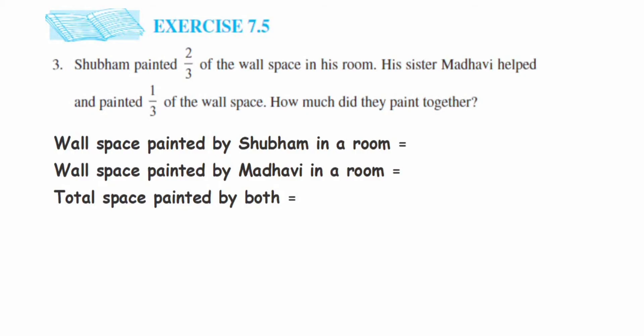Hey everyone, so here's a question on Exercise 7.5, third question. This is from the fraction chapter of class X. Shubham painted two-thirds of a wall space in his room. His sister Madhavi helped and painted one-third of the wall space. How much did they paint together?